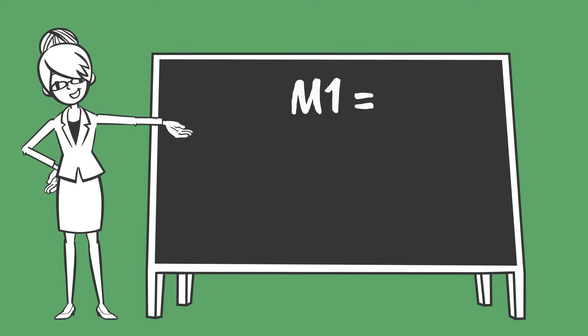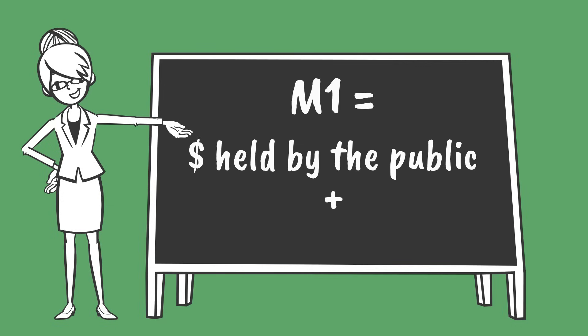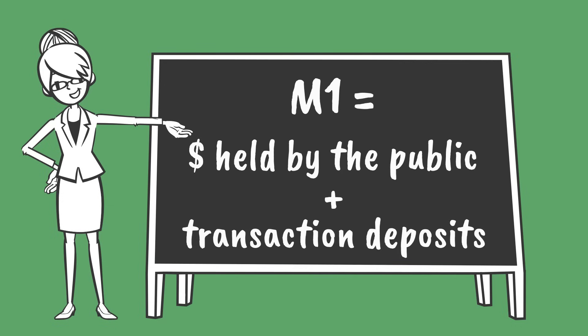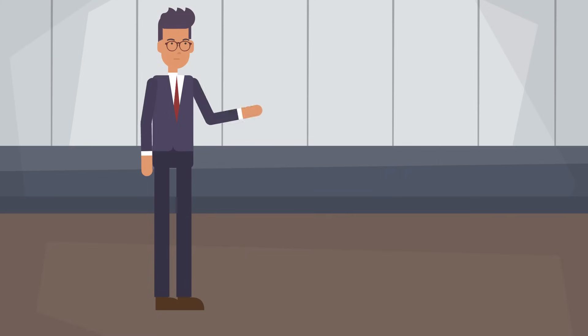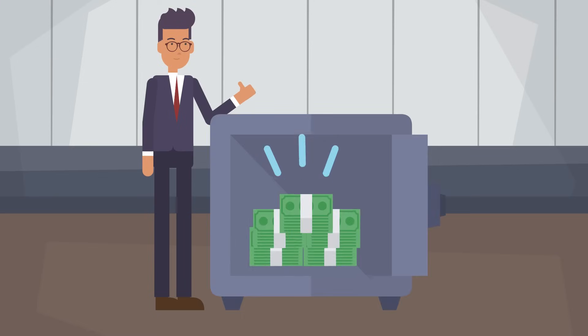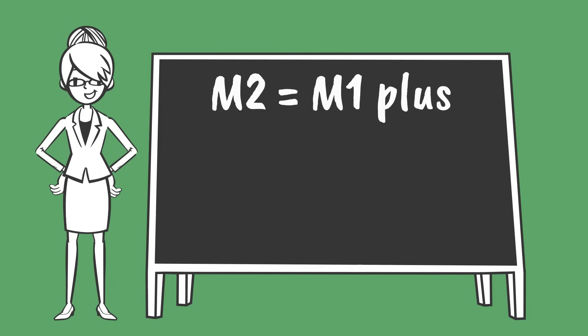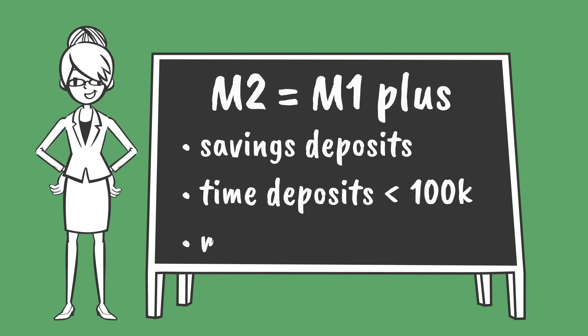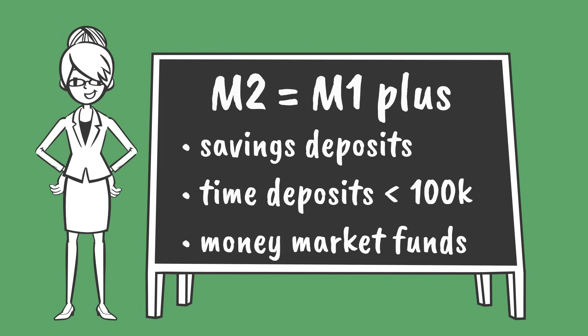B, M1 tells us how much currency is held by the public as well as how many transaction deposits exist — in other words, accounts and deposits that can be used for transactions immediately. C, M2 is basically M1 plus savings deposits, time deposits under $100,000, and retail money market fund shares. Each tells us something different.